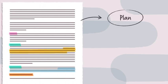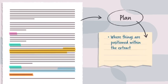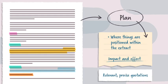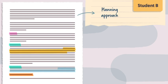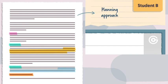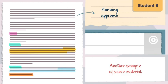We'll leave it there. Remember our top tips for success on this question: plan before you write up, think about where things are positioned within the extract to create impact and effect, and use relevant, precise quotations. Why not try out Student B's planning approach for yourself? You can use the AQA-style exam paper attached to this video or another example of source material. Good luck!